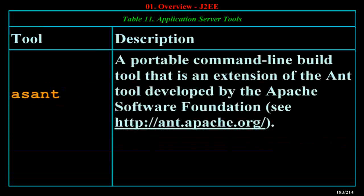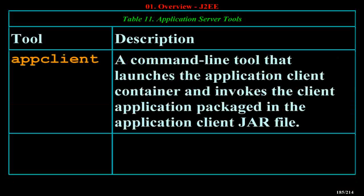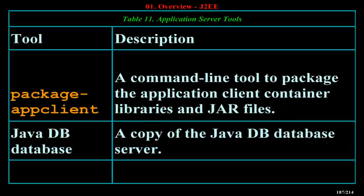Asant is a portable command-line build tool that is an extension of the Ant tool developed by the Apache Software Foundation. Asant contains additional tasks that interact with the application server administration utility. Appclient is a command-line tool that launches the application client container and invokes the client application packaged in the application client jar file. Capture Schema is a command-line tool to extract schema information from a database, producing a schema file that the application server can use for container-managed persistence. Package Appclient is a command-line tool to package the application client container libraries and jar files. Java DB Database is a copy of the Java DB database server.